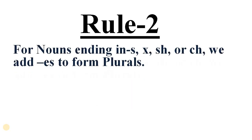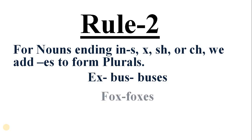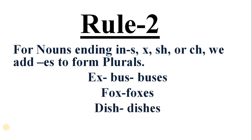Rule number two: for nouns ending in 's', 'x', 'sh', or 'ch', we add 'es' to form plurals. So for nouns that end with 's', 'x', 'sh', or 'ch', we add 'es'. For example, the plural of bus is buses — we added 'es' to make it plural. Fox becomes foxes. Dish becomes dishes. Church becomes churches.